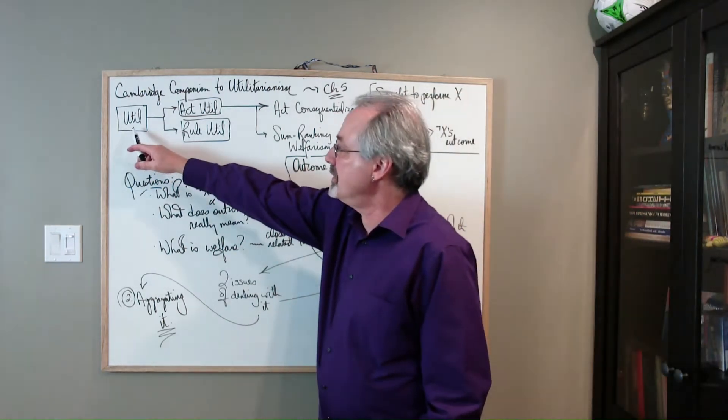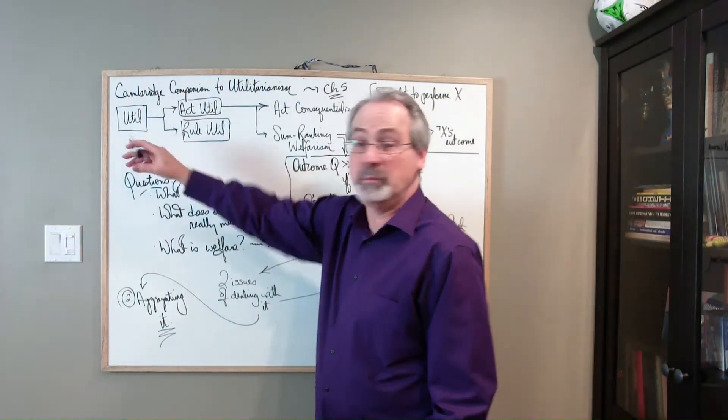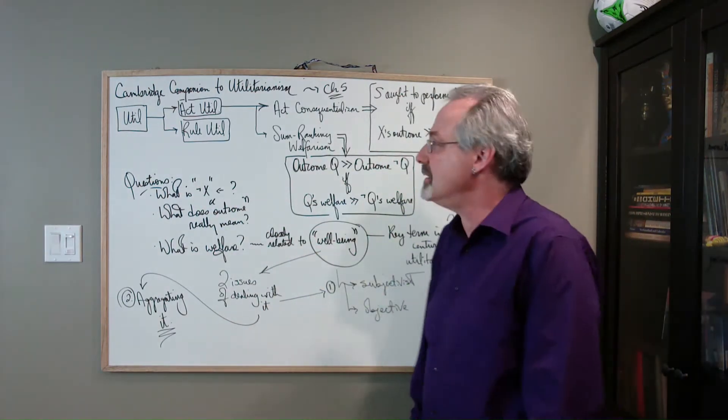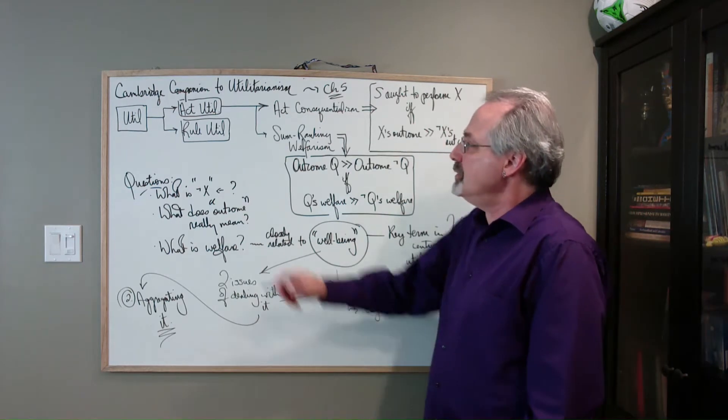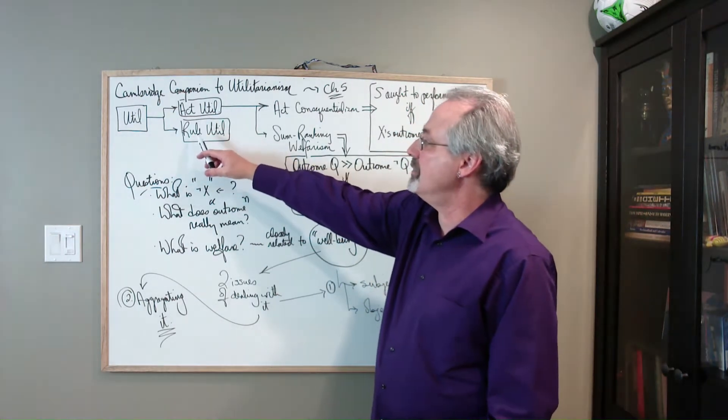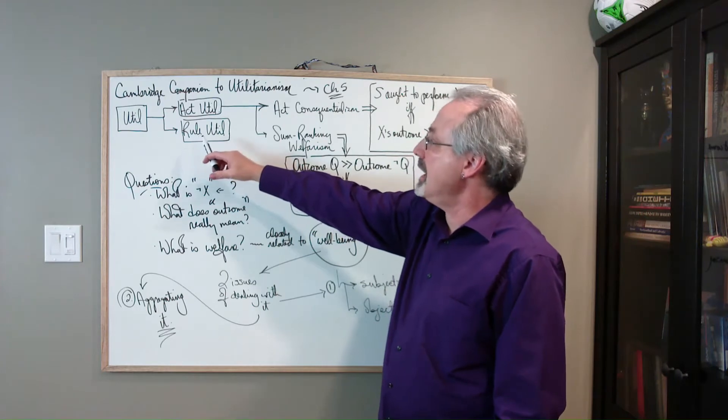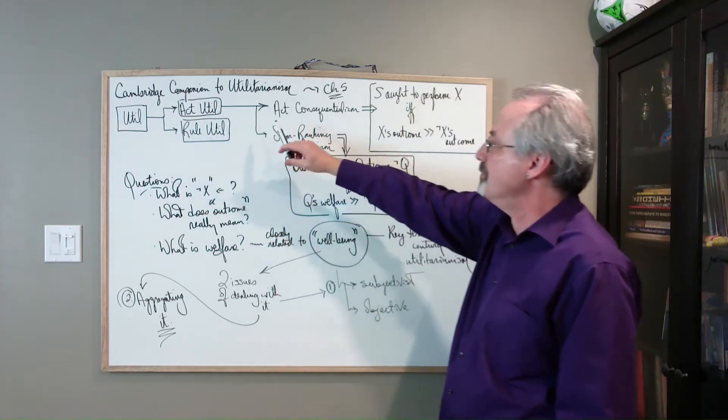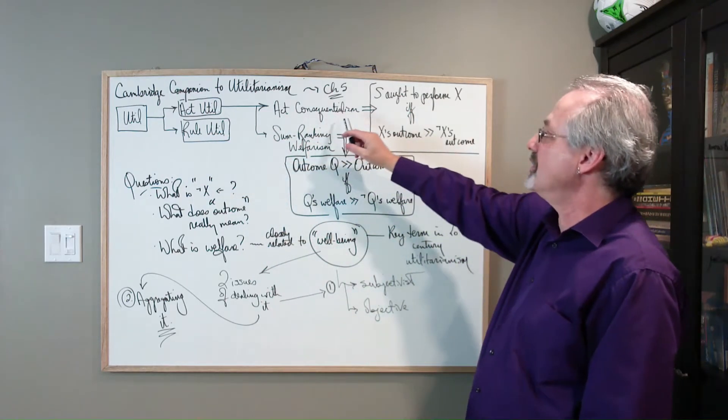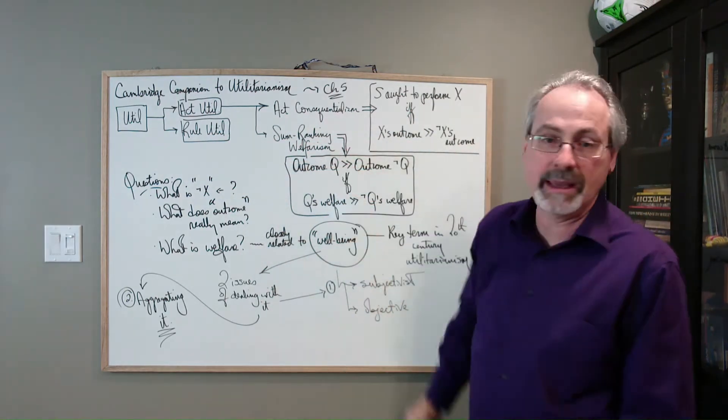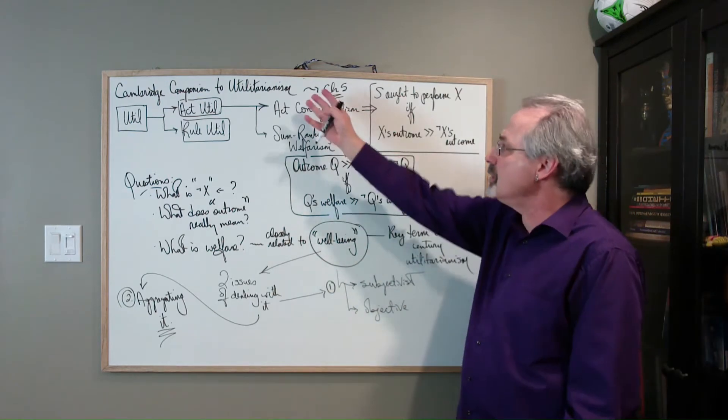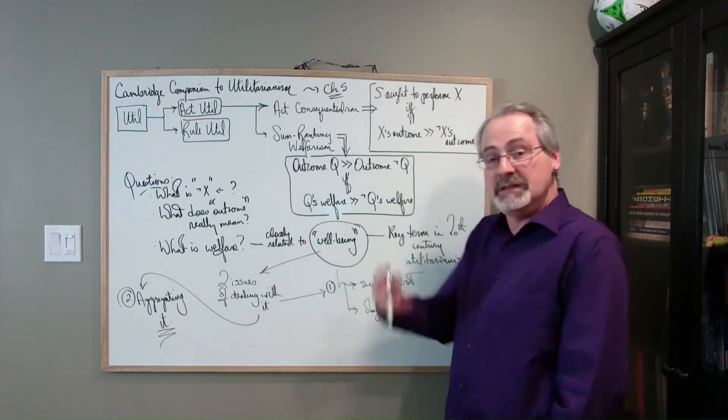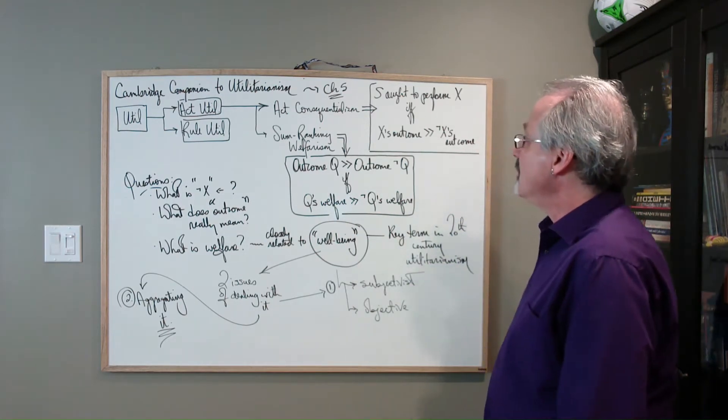Here's just a little bit of a schematic, just one part of the story, because as I'm trying to get across, it's a complicated history. So, utilitarianism breaks into act and rule, as we saw, and then I'm just going to put the rule utilitarianism to the side, and then act utilitarianism breaks into act consequentialism and sum ranking welfarism.